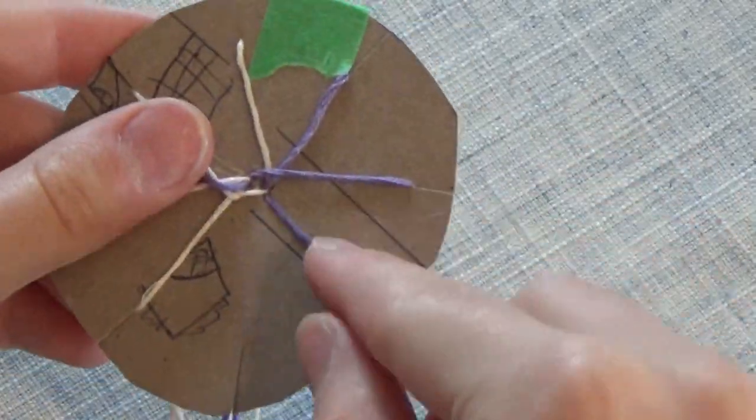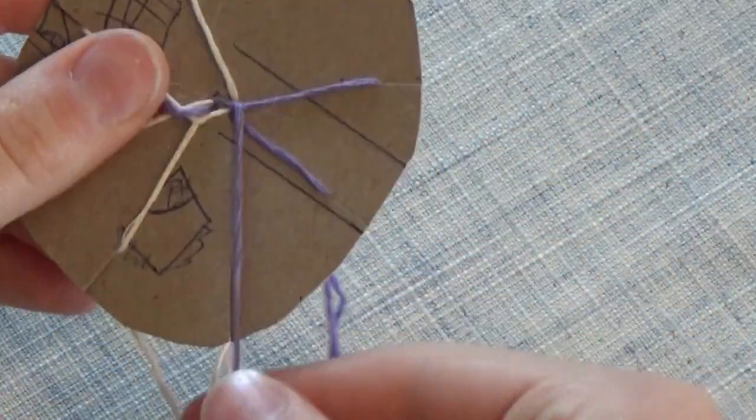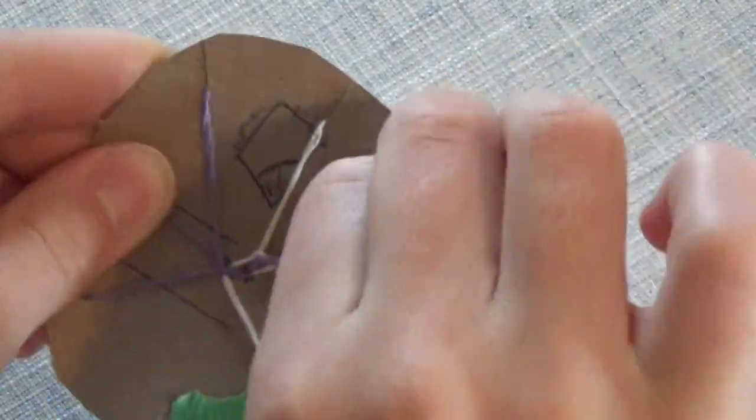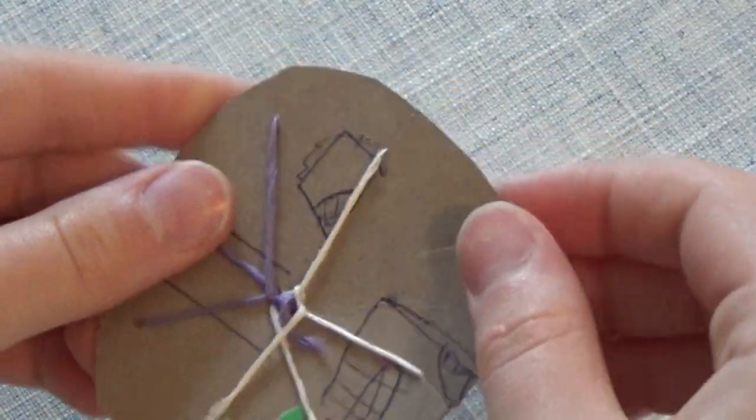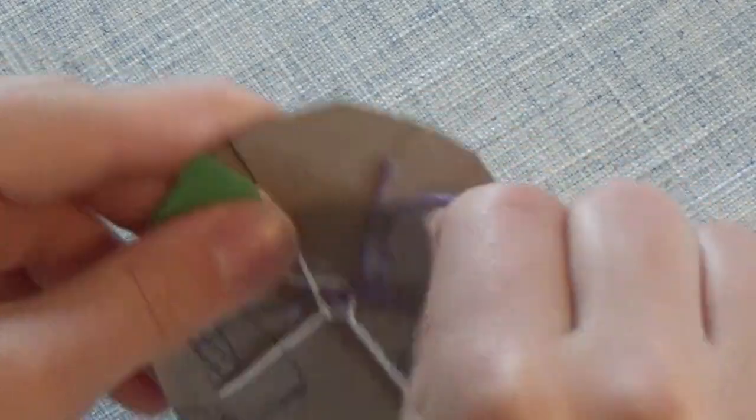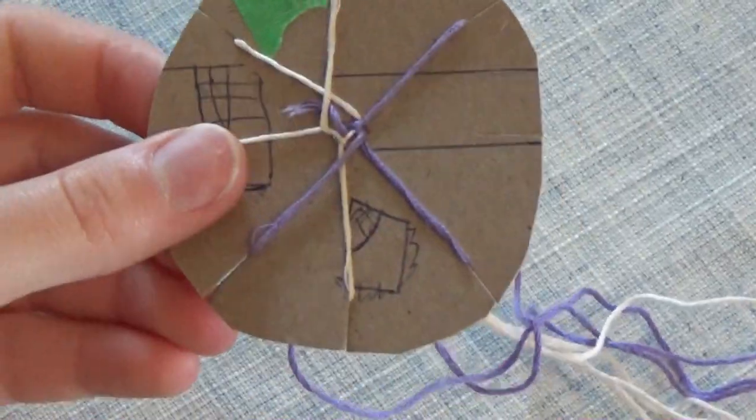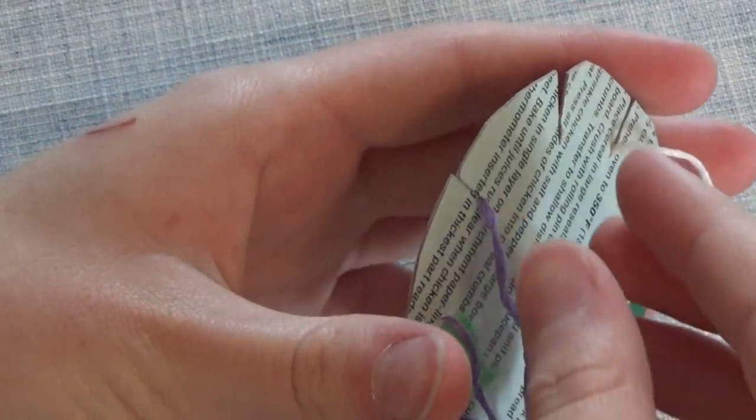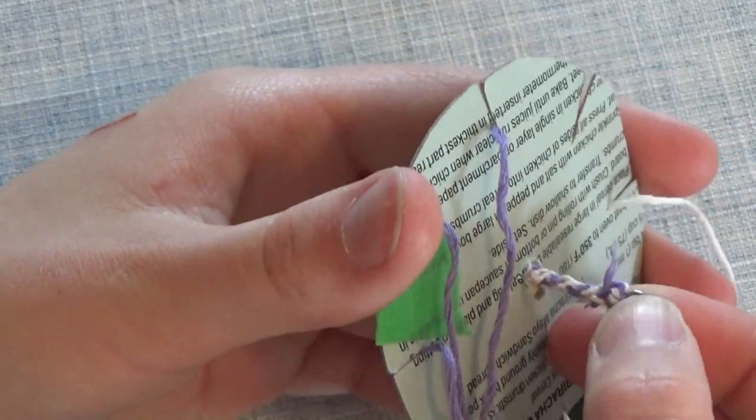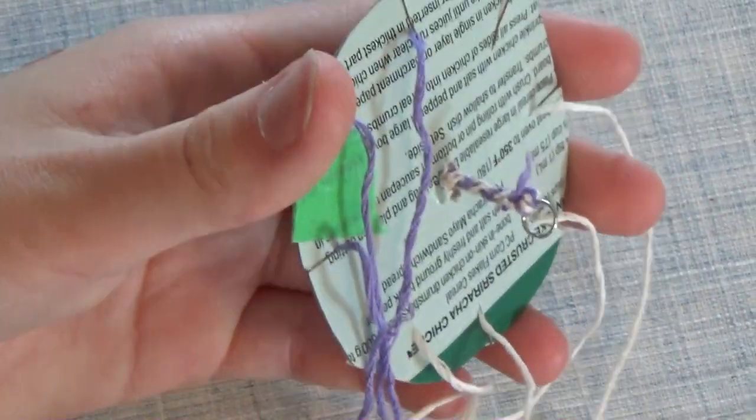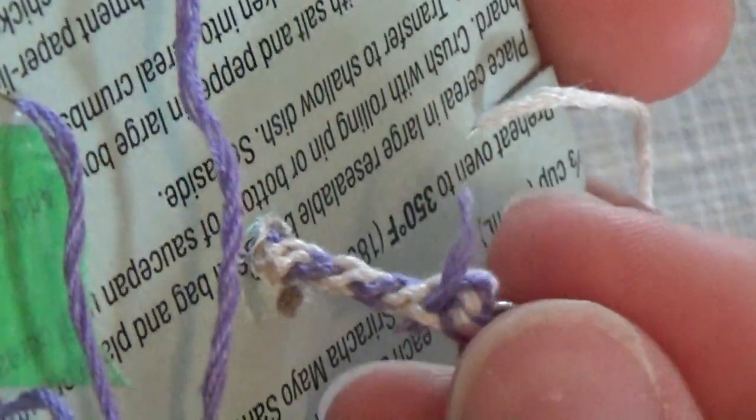So you're just going to keep counting and rotating until you basically make the size lead rope you want. It does take a little while, but I find that it looks a lot like a lead rope when it's done. And then you can slowly pull the jump ring out the bottom to see what your lead rope is going to look like.